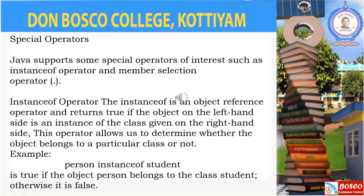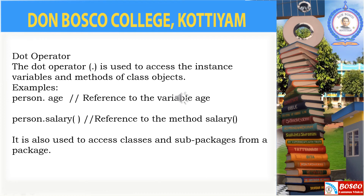Next are the special operators. The first special operator supported by Java is the instanceof operator. This operator is used to check whether the object on the left-hand side is an instance of the class given on the right-hand side. For example: person instanceof student. Here student is an object and person is a class. This statement checks whether the object student is an instance of the class. It returns true if it is, otherwise it returns false.